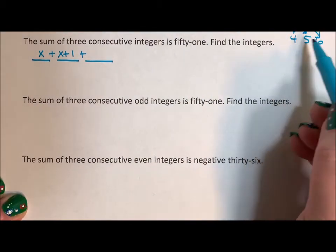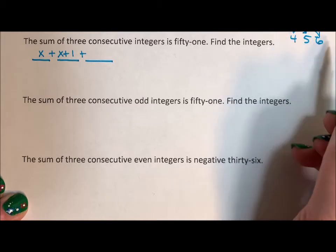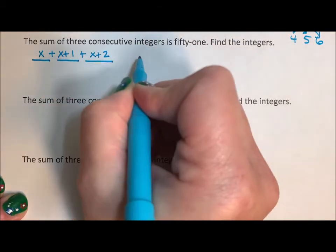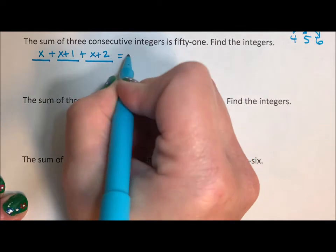Remember, we're always starting at four. Six is two greater, so that would be x plus two. But it's equaling 51.